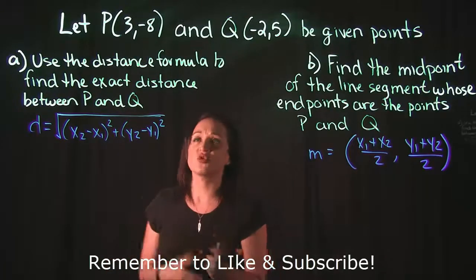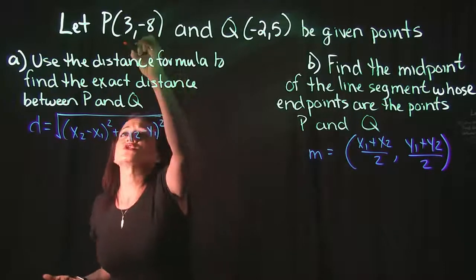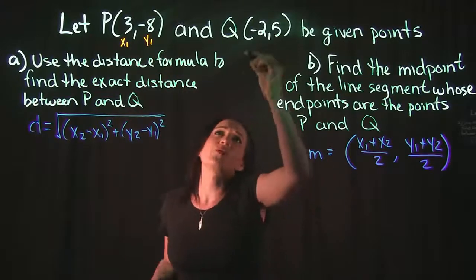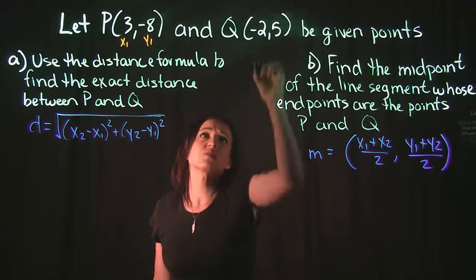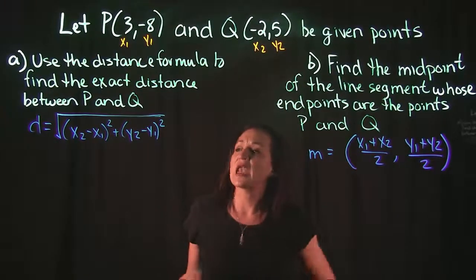Point P, I'm just going to call this our first point, so I'm going to say that this is (x1, y1), and then point Q I'm going to call this our second point, so it's going to be (x2, y2), and I'm going to plug directly into the distance formula with the points I just labeled.